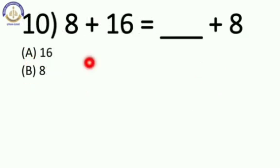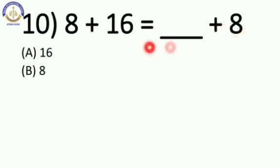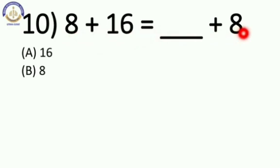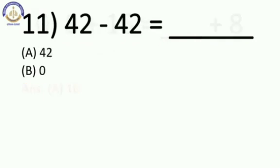Now next: 8 plus 16 is equal to blank plus 8. Here we can apply the fact of addition — addition can be done in any order. So 8 plus 16 is equal to 16 plus 8. Our answer is 16. Option number A.